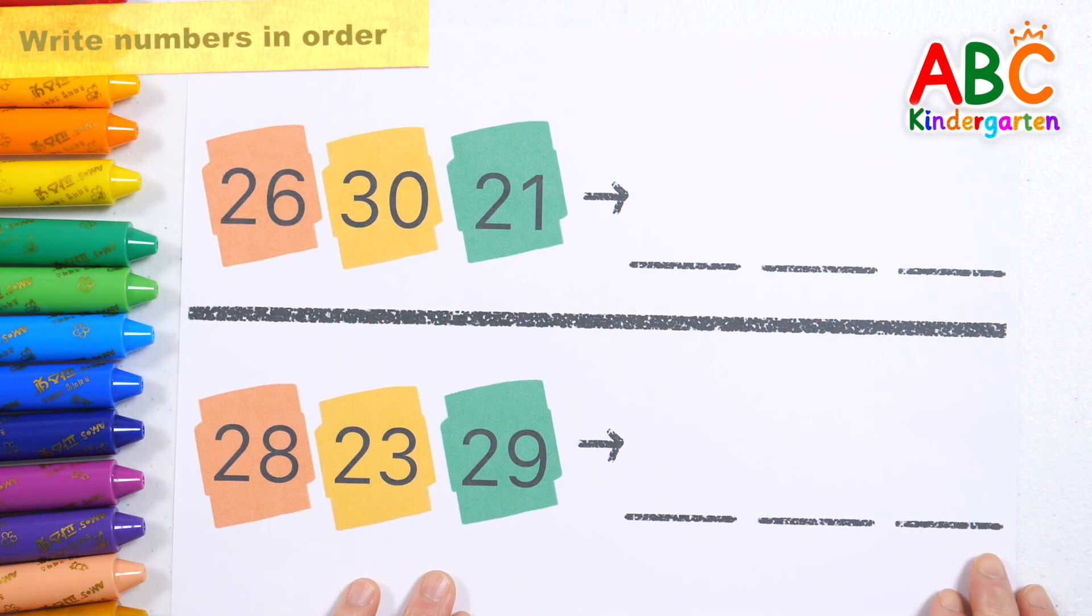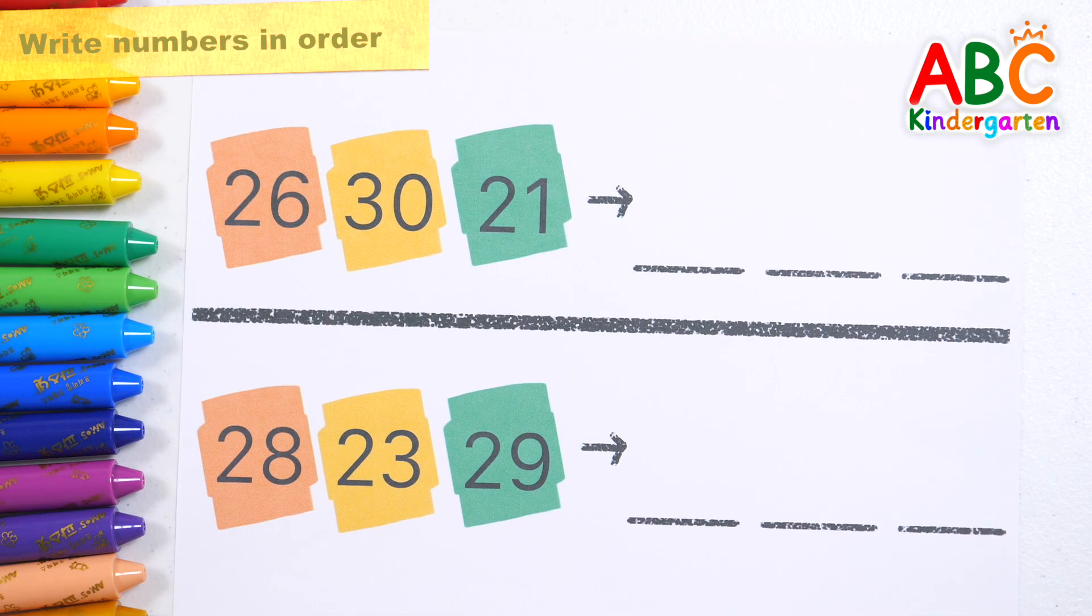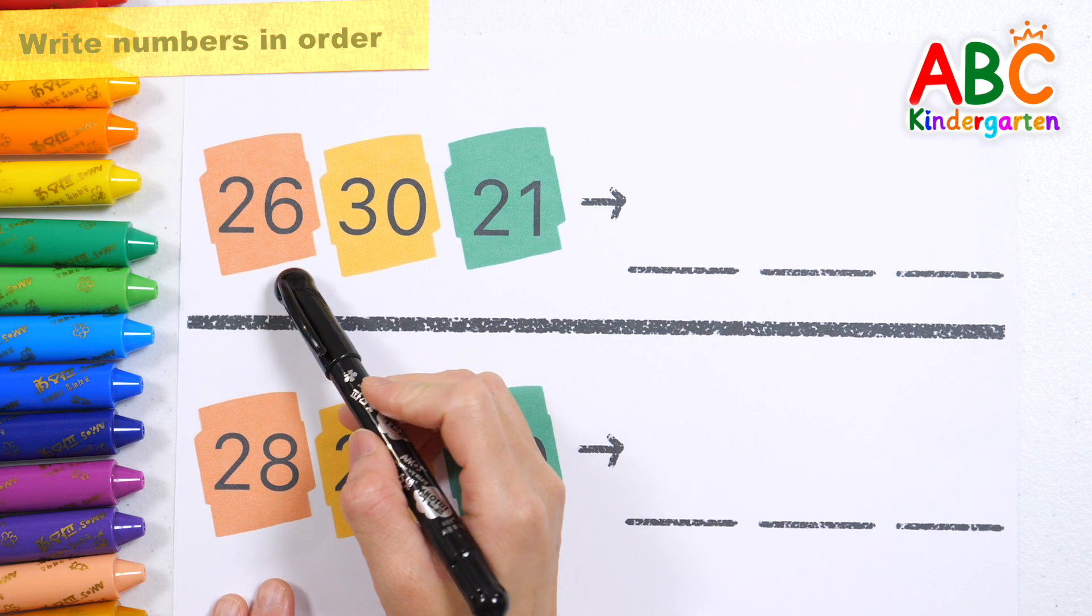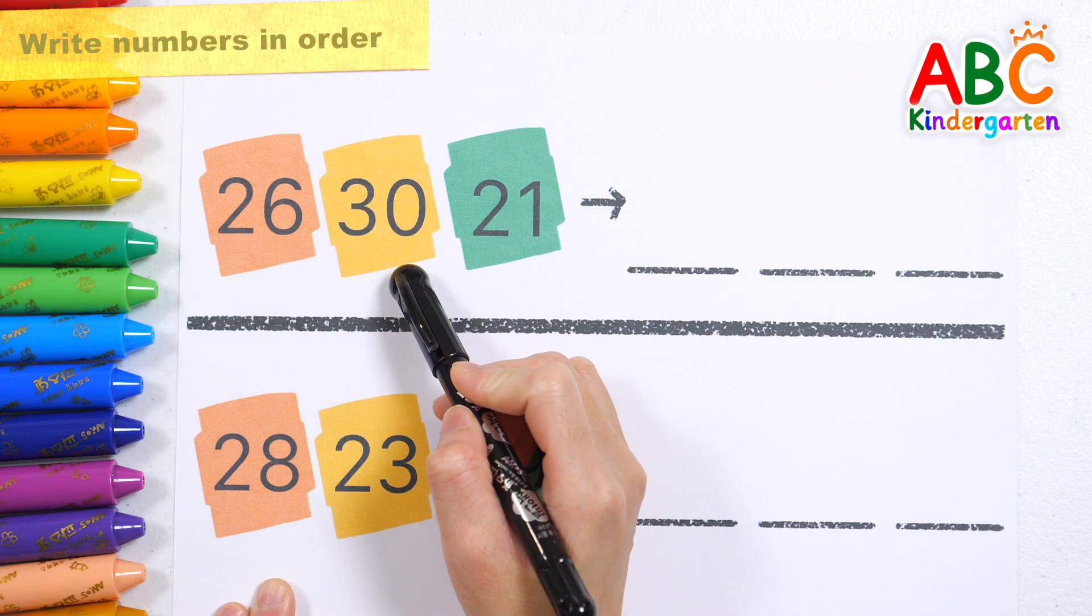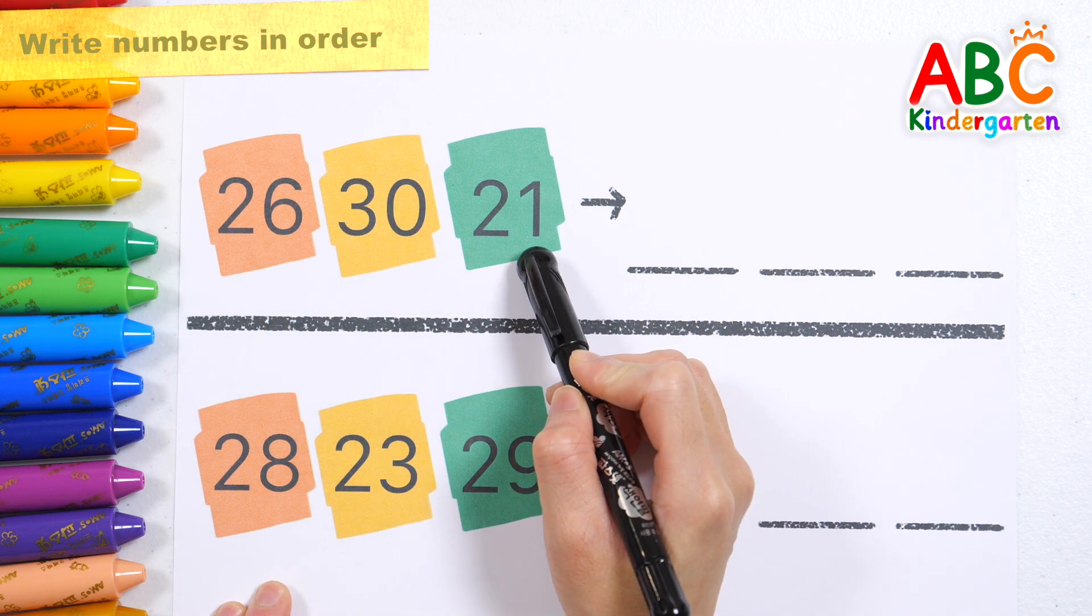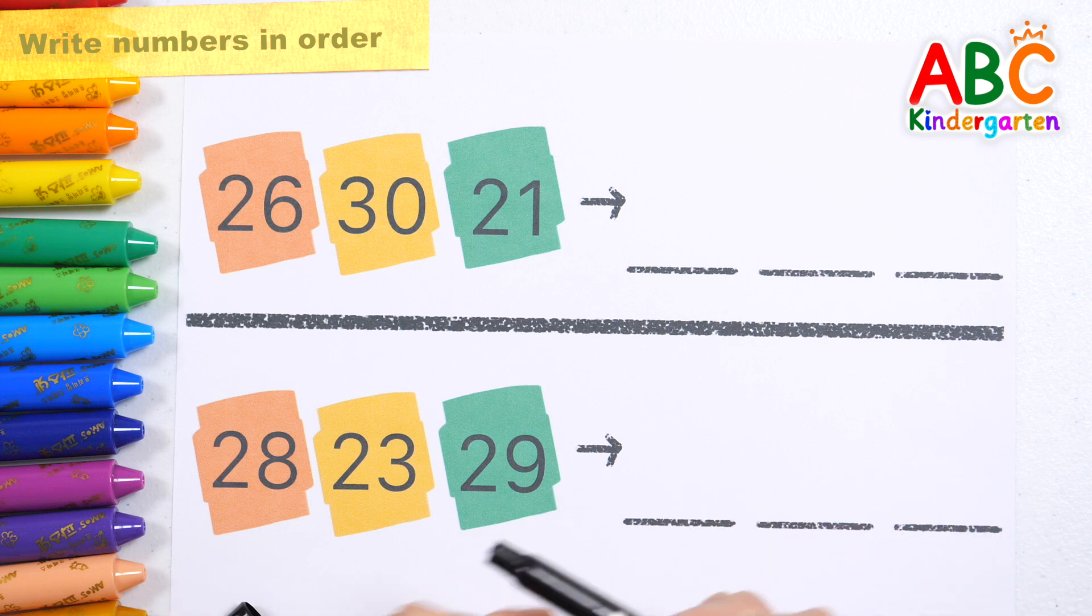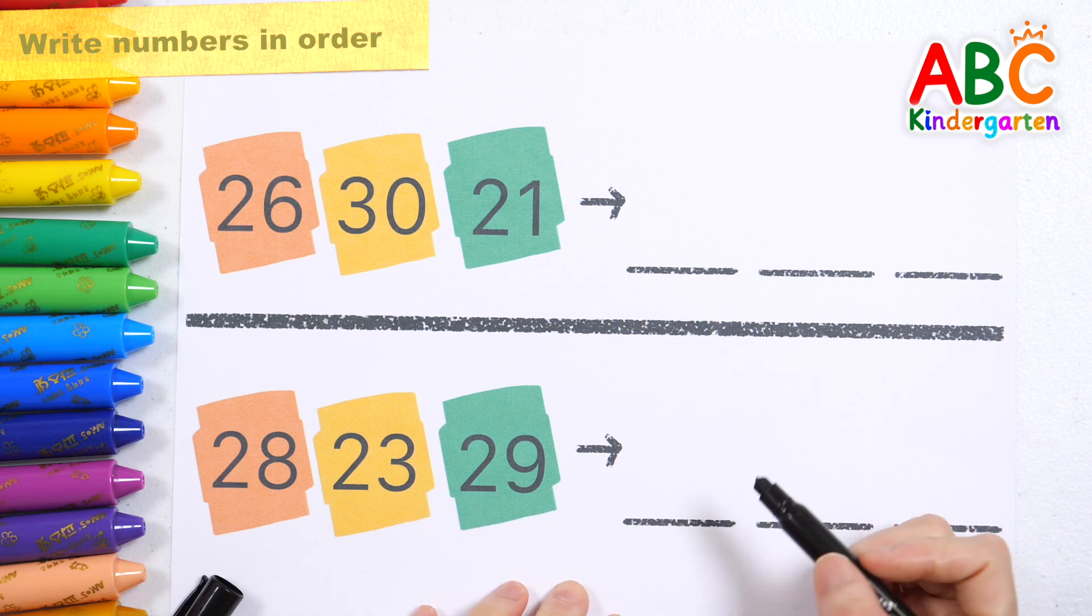Let's write the numbers in order. Let's read the numbers: 26, 30, 21. Write down the numbers in order, starting from the smallest.